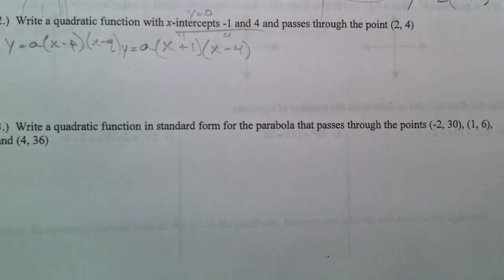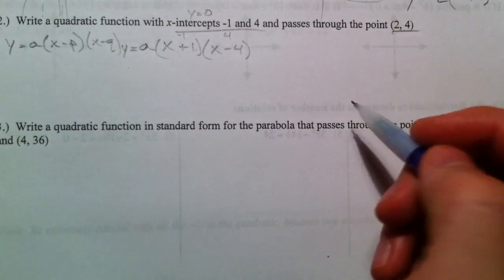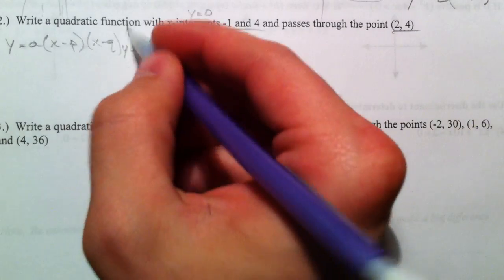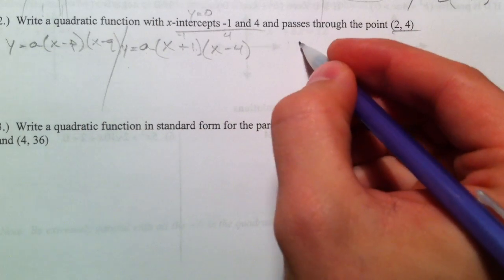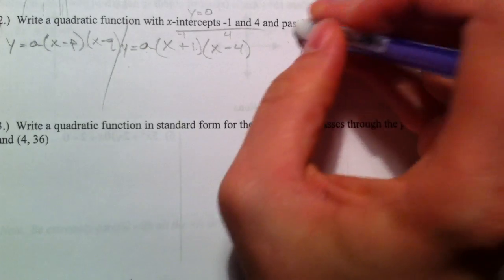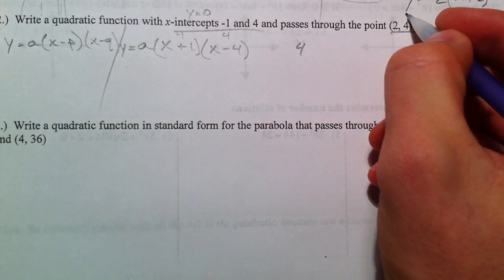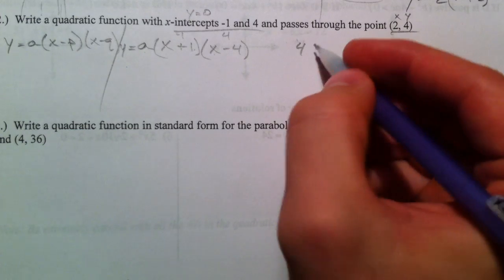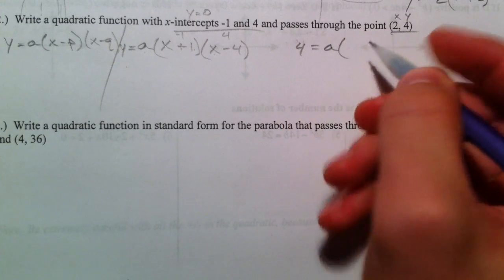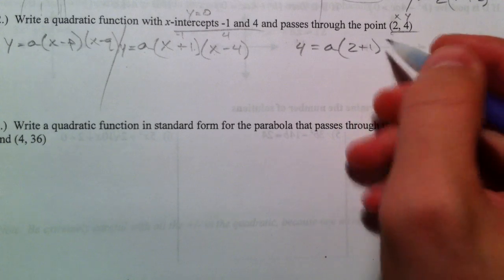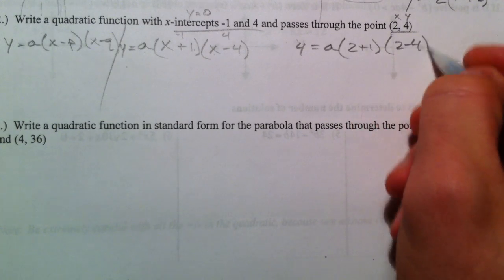Now there's this a out front. You're going to have to know these forms. There's this a out front, we don't know the multiplier. But that's what comes into play with this one. So y equals, and actually let's plug in the 4. Y is 4 and x is 2. So 4 equals some a, and x is 2, so 2 plus 1, 2 minus 4.